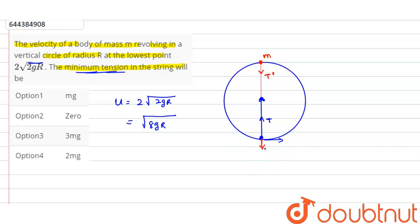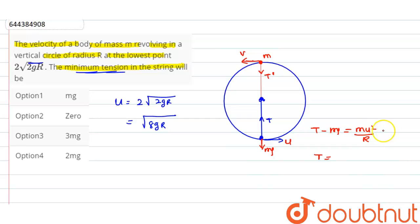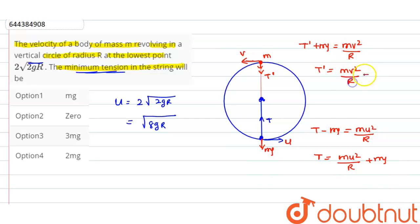At the topmost point, the tension will be minimum because mg acts downward. Let velocity at the lowest point be u and at the topmost point be v. At the lowest point: T − mg = mu²/r, so T = mu²/r + mg. At the topmost point: T' + mg = mv²/r, so T' = mv²/r − mg.